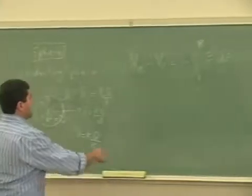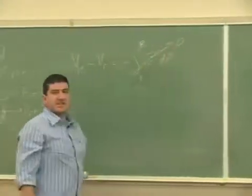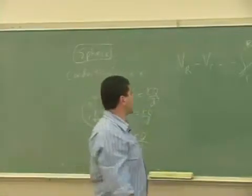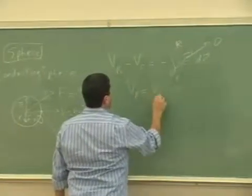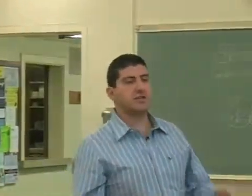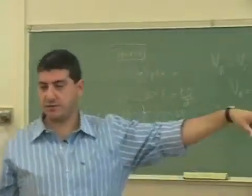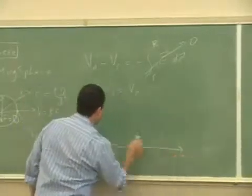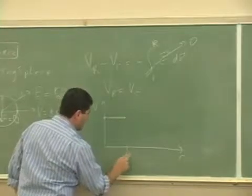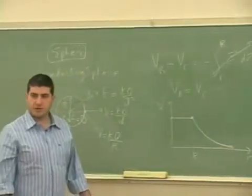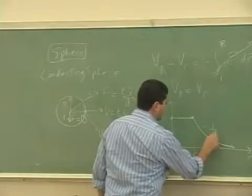In this case, the electric field is zero everywhere inside the conducting sphere. So that means the potential at any point inside a conducting sphere is equal to the same potential at the surface of the conducting sphere. The potential graph will look like this: it's constant until you reach big R, and after that it decreases as a function of 1 over D.